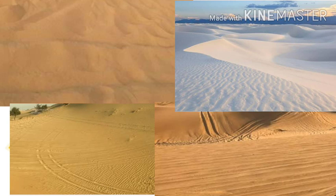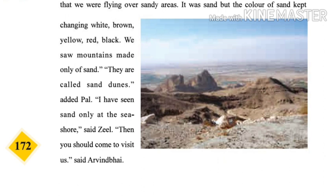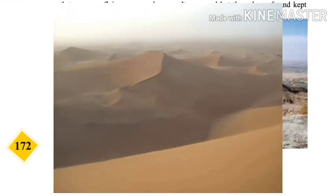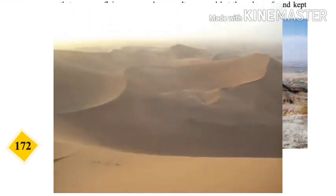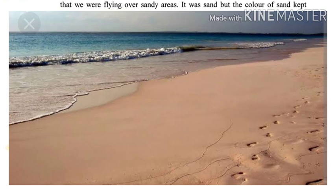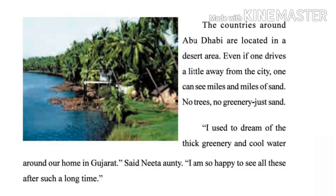Sand dunes are heaps of sand formed by wind in desert areas. When the wind blows, it carries sand and creates mountain-like formations. Zeel said: I have seen sand only at the seashore. Arvind uncle said: then you should come to visit us.